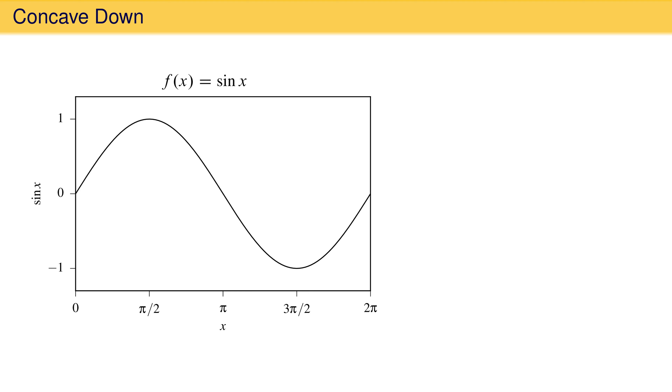The way a function curves can be determined from its derivatives. Let's look at this by examining the function sine x from 0 to 2 pi. The first derivative of sine x starts out as positive, which makes sense because sine x is initially an increasing function.